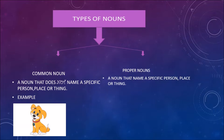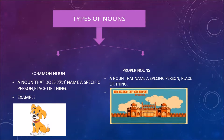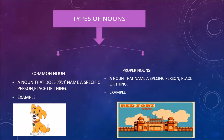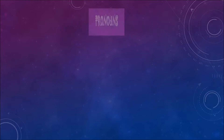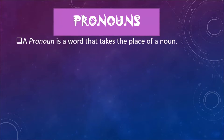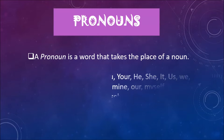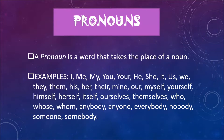Next is proper noun — a noun that names a specific person, place, or thing. For example: Red Fort. Next is pronoun. A pronoun is a word that takes the place of a noun. For example: I, me, my, you, your, he, she — all these are pronouns. It takes the place of a noun.